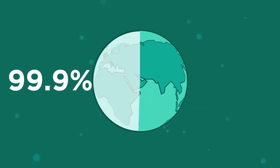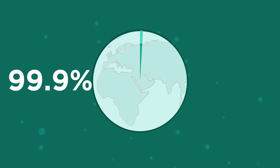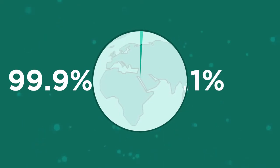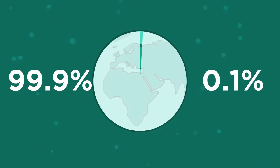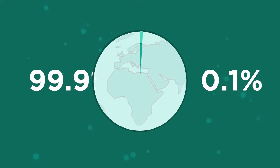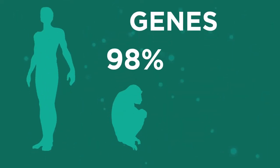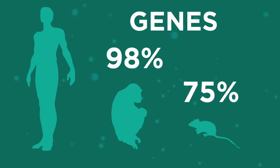The genome of every person on earth is 99.9% the same. It's that tiny 0.1% that makes up genes that give us our unique differences. In fact, our genes are 98% similar to a chimpanzee's and 75% the same as a mouse.